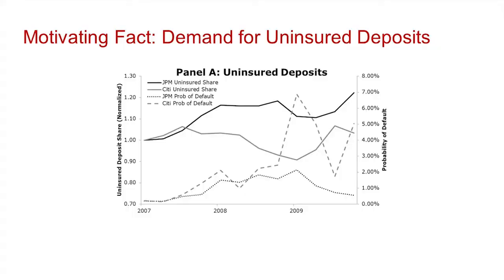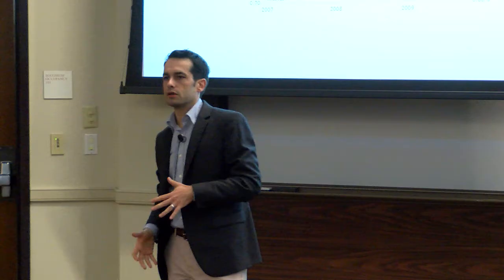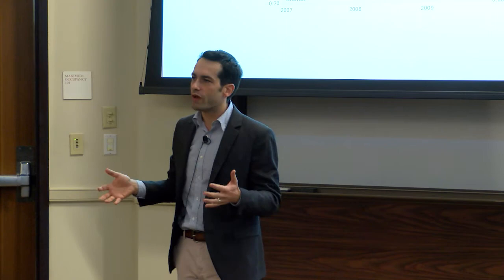Do consumers care about banks defaulting? I have data on Citi and JP Morgan. Down here are their CDS rates; up there is the market share they have of the uninsured deposit market, normalized to 2007 shares — think of this as a diff-in-diff regression. Both CDSs went up during the crisis, but Citi looked substantially less survivable than JP Morgan. And at the same time, Citi's market share of uninsured deposits shrank — depositors walked away from Citi to go to other banks or exit the banking market altogether.